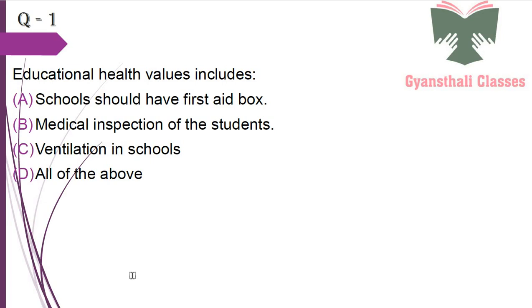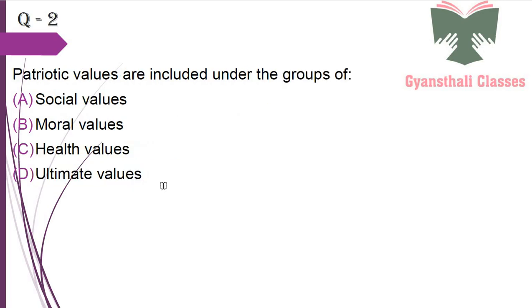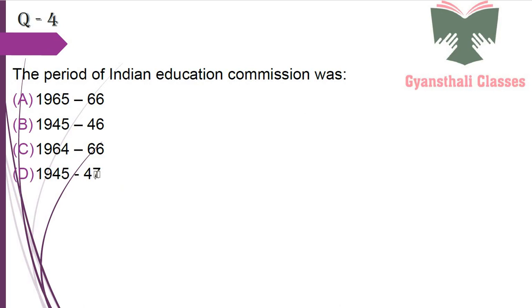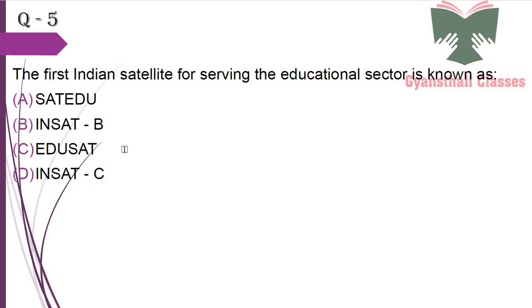Next question: Educational health values include schools should have a first aid box — yes; medical inspection of students — yes; ventilation in schools — yes. Answer: all of the above. Tribal values are included under the group of social values. The headquarters of Mahatma Gandhi Antarrashtriya Hindi Vishwavidyalaya is situated in Wardha. The period of the Indian Education Commission (Kothari Commission) was 1964–66. The first Indian satellite for serving the educational sector is known as EDU-SAT.